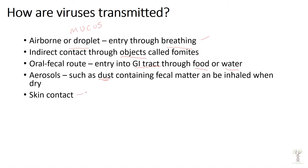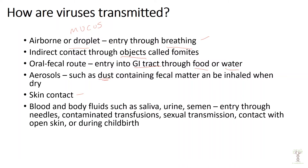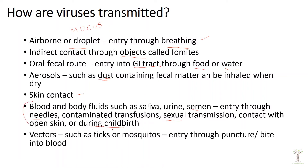Sometimes viruses are transmitted through skin contact — an example would be cold sores, which is the herpes virus. Sometimes they're transmitted through blood or body fluids like saliva, urine, and semen. HIV is transmitted sexually and also through blood, either through contaminated needles, open skin, and even sometimes during childbirth. Lastly, some viruses can be transmitted through vectors — organisms that carry the virus, like ticks or mosquitoes. West Nile virus is carried by mosquitoes.